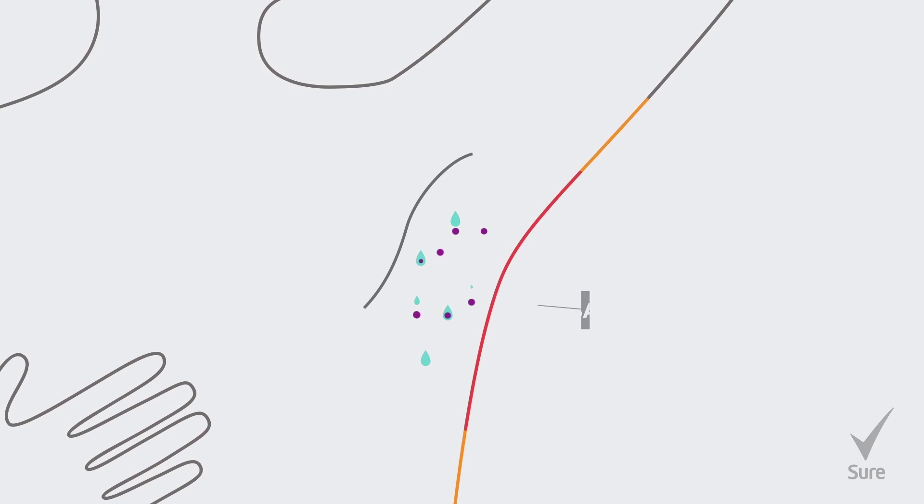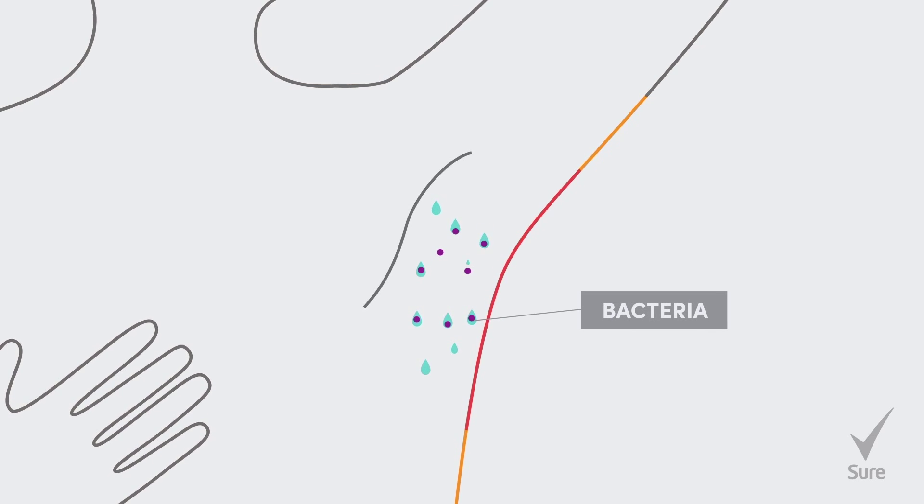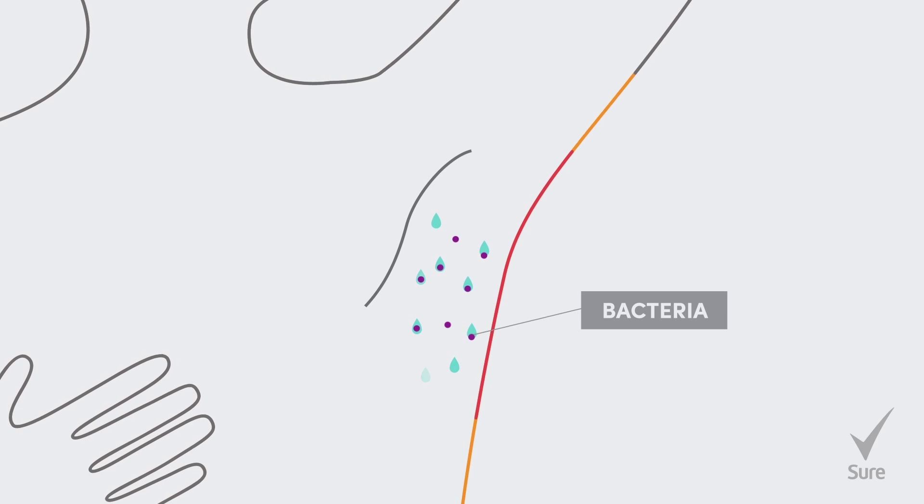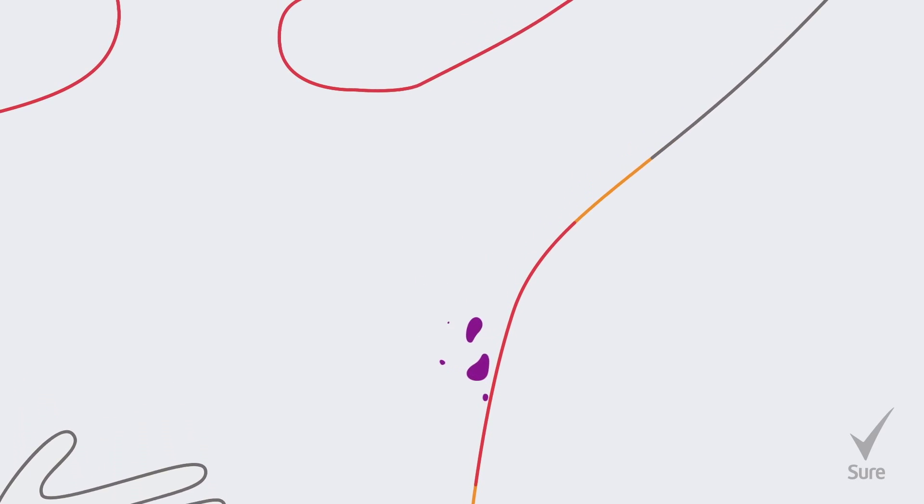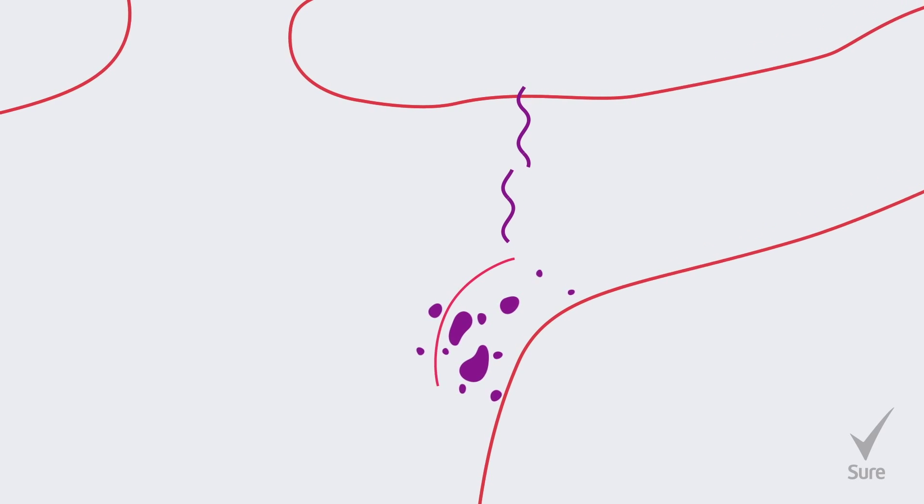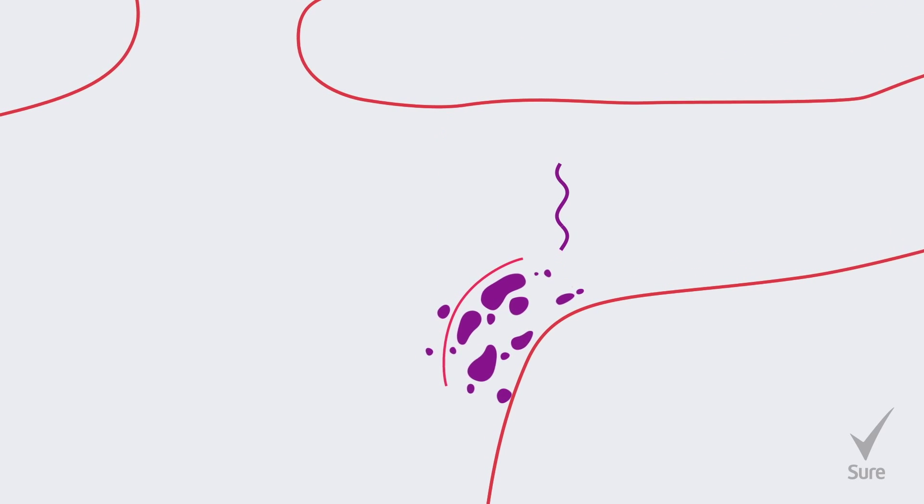Body odor, or BO, is caused by bacteria. Millions of harmless bacteria naturally live on our skin and feed off our sweat. The warm, damp conditions of underarms make it an ideal environment for bacteria to thrive.